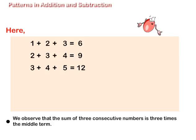We observe that the sum of three consecutive numbers is 3 times the middle term. Therefore, to complete 5 plus 6 plus 7, we multiply 6 by 3 and get 18.